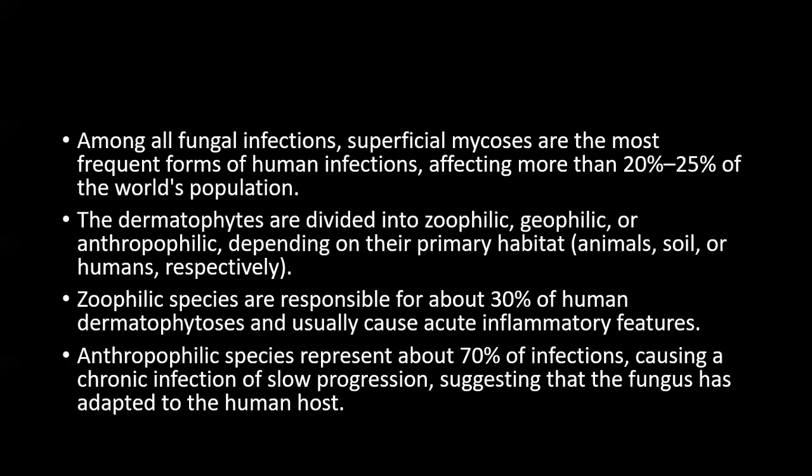The dermatophytes are divided into zoophilic, geophilic, and anthropophilic depending upon their primary habitat — animal, soil, or humans respectively. The zoophilic species are responsible for 30 percent of human dermatophytosis and usually cause acute inflammatory flare. The anthropophilic species represent 70 percent of infections and cause chronic infections of slow progression, suggesting that the fungus has adapted to the human host.